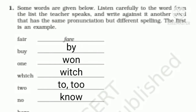Now let us study homophones — words with the same pronunciation but different meanings. First: 'fair' (F-A-I-R) and 'fare' (F-A-R-E), the rent paid for travel. Second: 'buy' (B-U-Y, to purchase) and 'bye' (B-Y-E, to say goodbye). Third: 'one' (O-N-E, the number 1) and 'won' (W-O-N, past tense of win). Fourth: 'which' (W-H-I-C-H) and 'witch' (W-I-T-C-H).